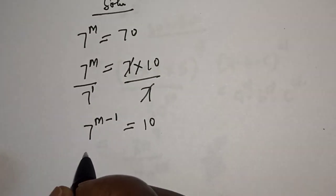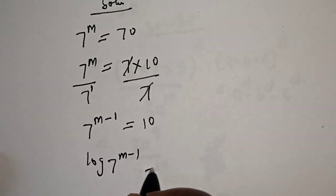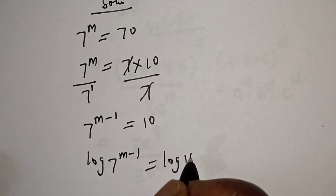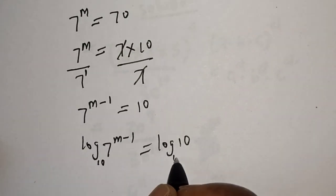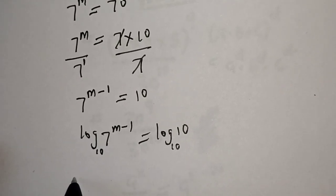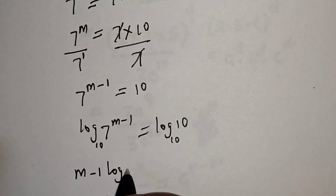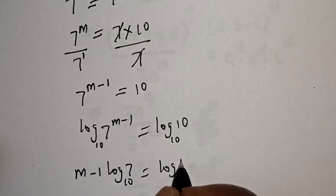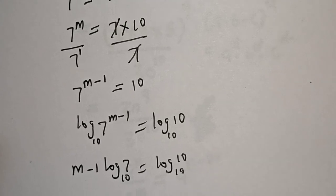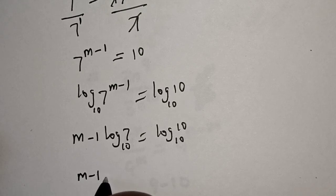Let's take the log of both sides. Log 7 raised to power m minus 1 equals log 10. Let's make everything base 10. We have (m minus 1) log₁₀ 7 equals log₁₀ 10. And we know log₁₀ 10 is 1, so (m minus 1) log₁₀ 7 equals 1.